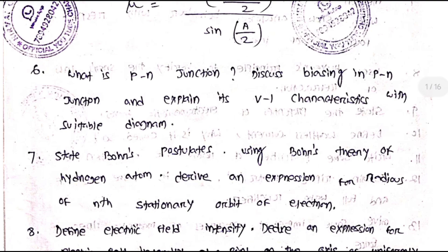What is a PN junction? Discuss biasing in a PN junction and explain its V-I characteristics with a suitable diagram.